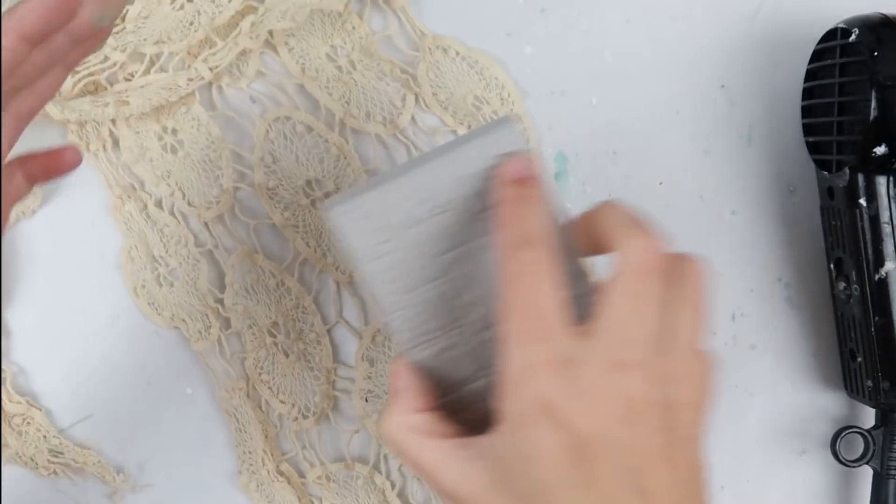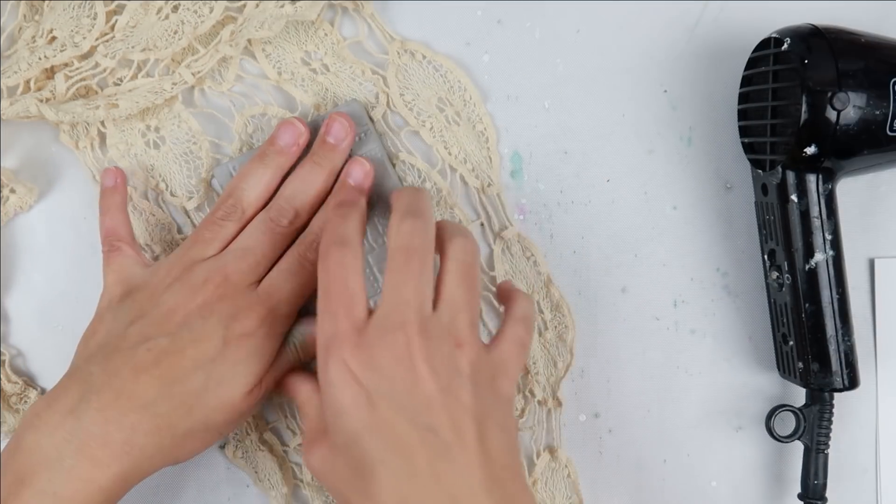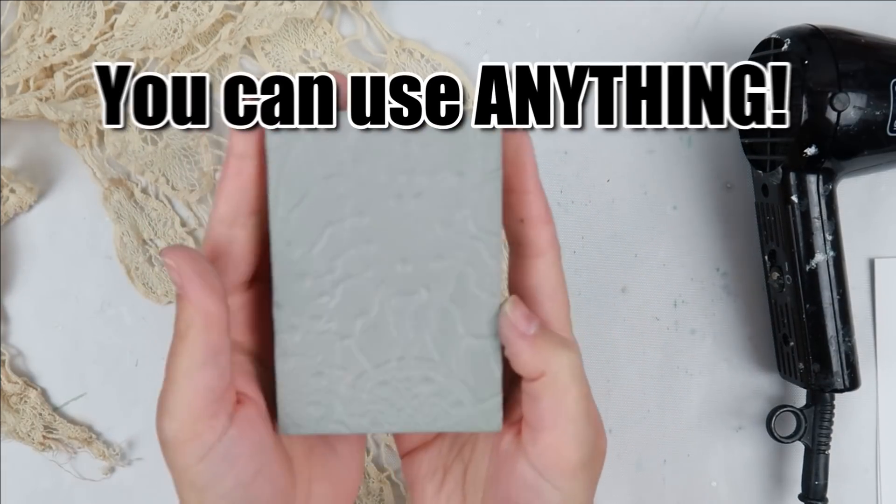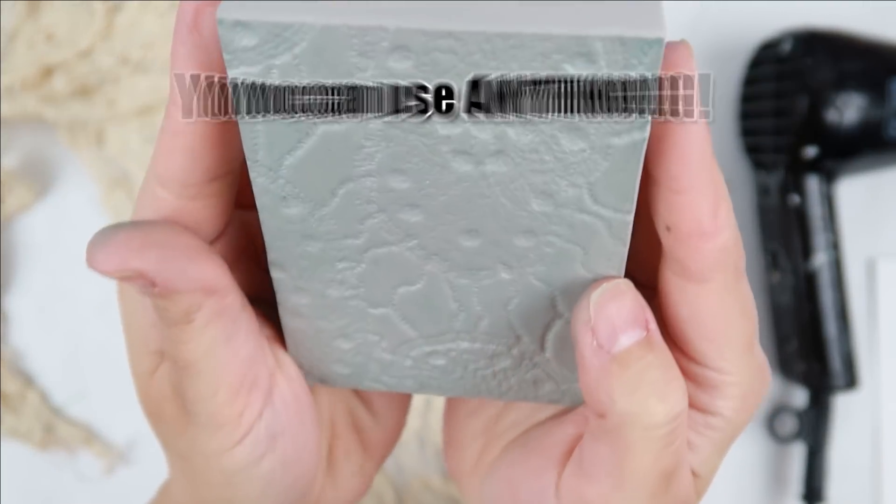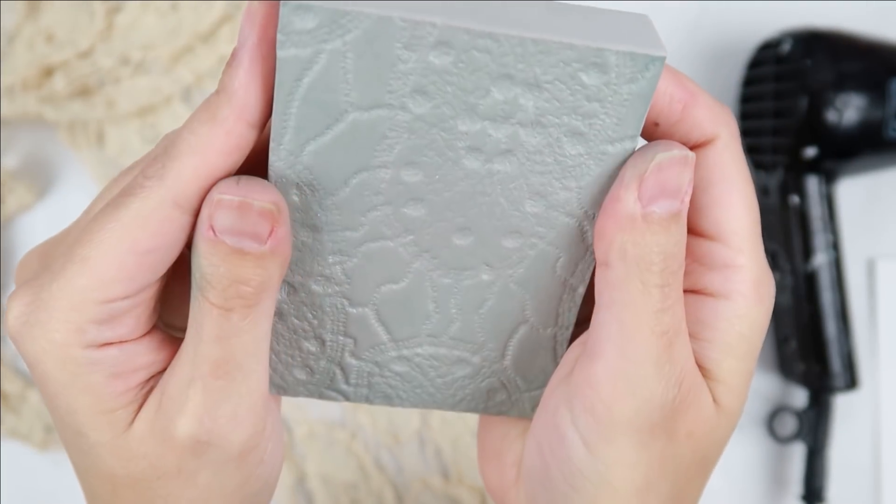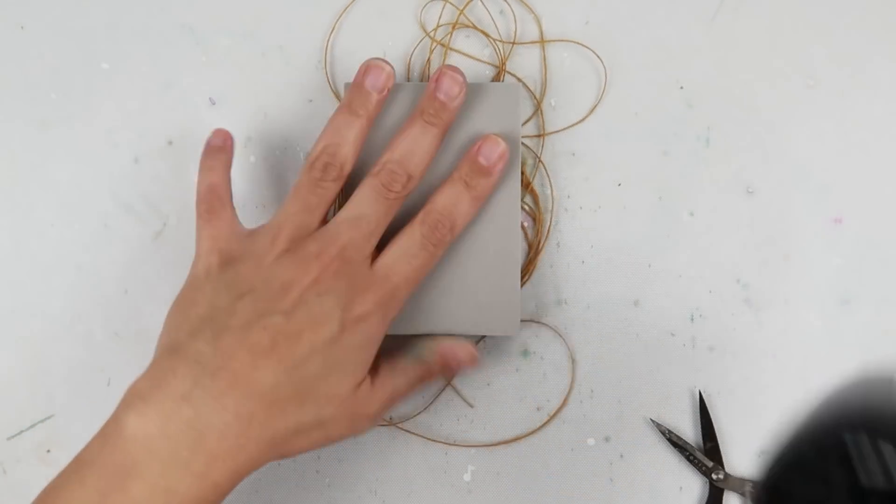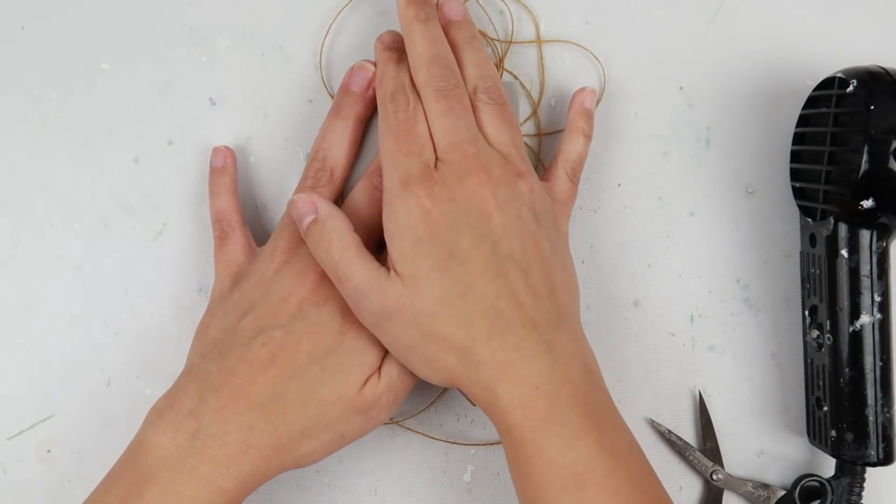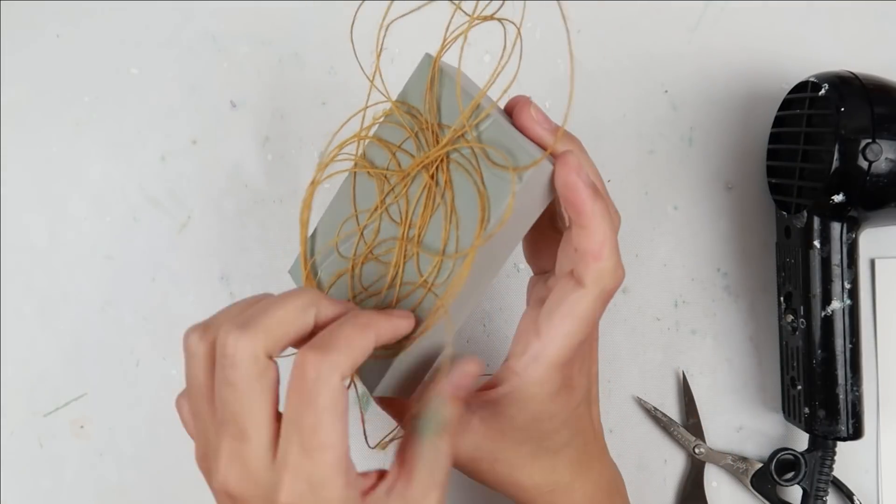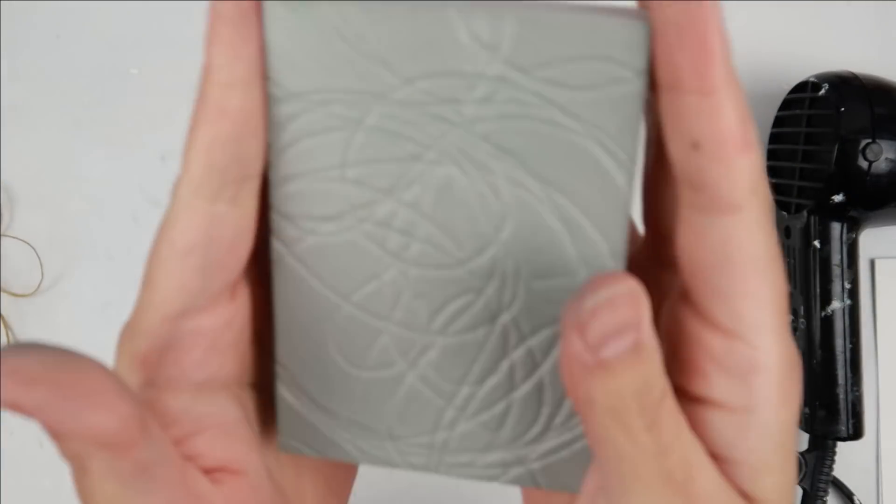If you don't have a lot of stamps, dies, or embossing folders, don't worry, you can use anything from around your house. I'm just using some old lace. It gives a really unique texture. I am going to heat the foam back up and press it into some random string that I have bunched up and put on my work surface. I think the string might be one of my favorites.